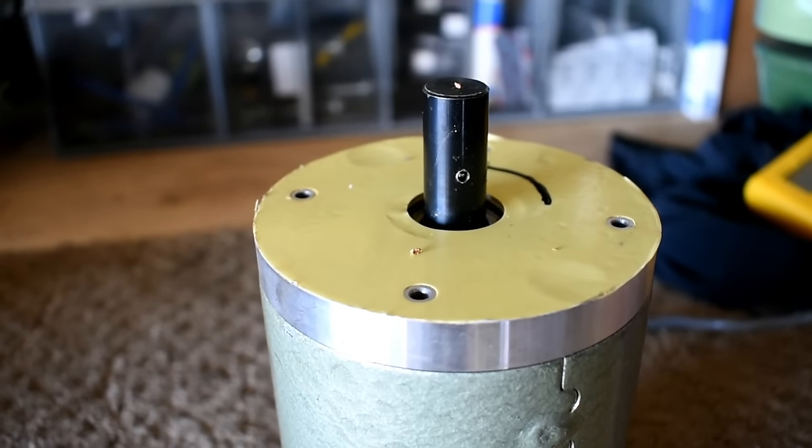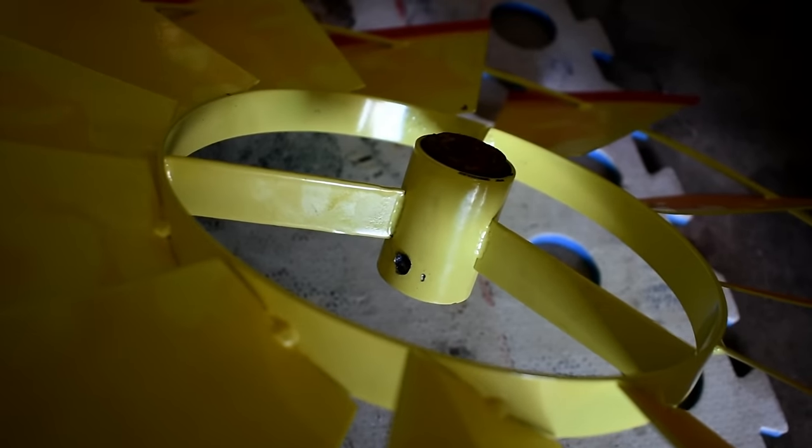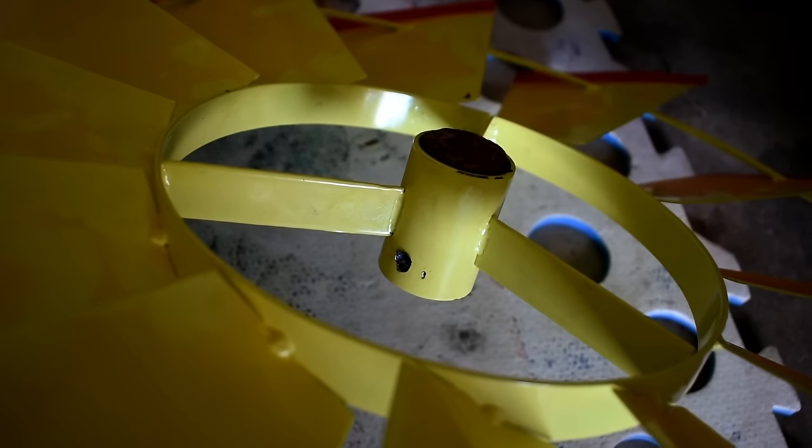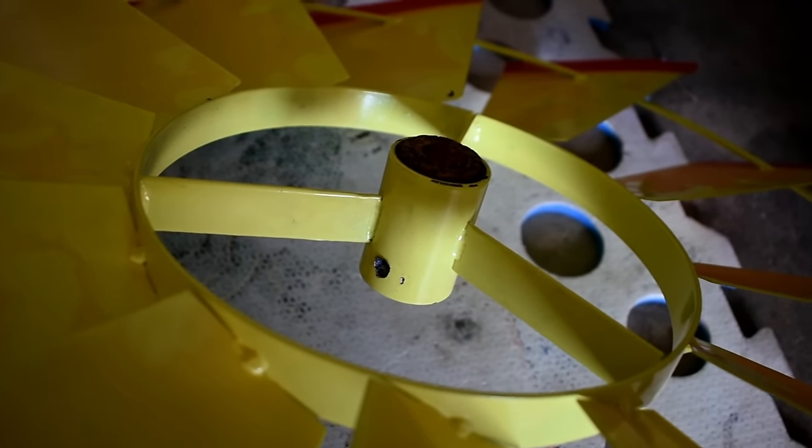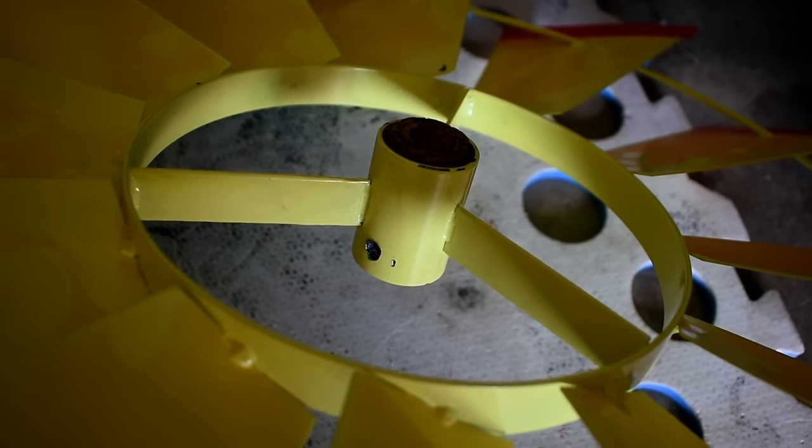Alright, so I've drilled a hole through the arbor on the motor. And then I drilled a hole through this piece in the center of the windmill. I'm going to slip that back on to the arbor, and then slide a pin through it, and then it won't be able to move. So when the wind starts turning the windmill, it will turn the motor as well.